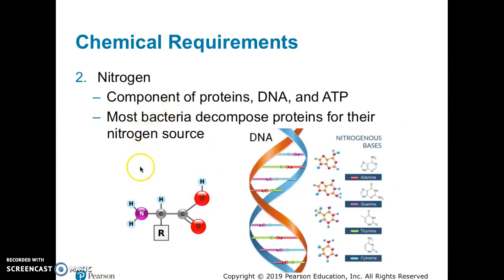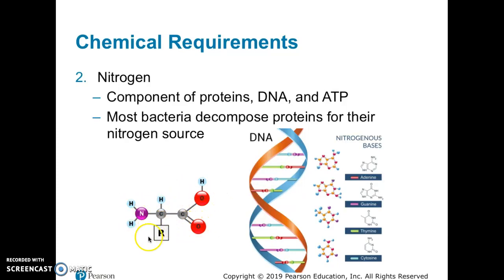Second, nitrogen. Back to the proteins: the backbone of every amino acid follows the same pattern — NCC stands for nitrogen, carbon, carbon. So every building block of every protein has nitrogen in it. There's also the R group, which stands for a variable group. For every amino acid, this part is the same and has the same nitrogen, hydrogens, carbons, and oxygen. But what's attached to the middle carbon differs for each amino acid, though all of them still have nitrogen.